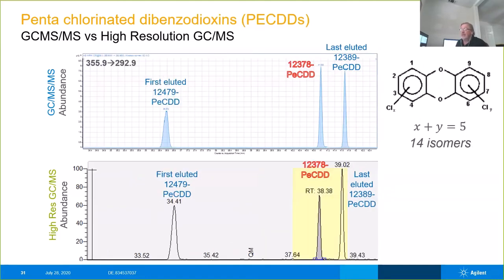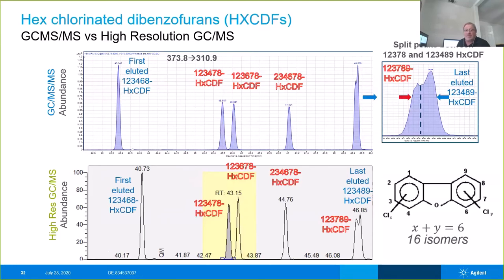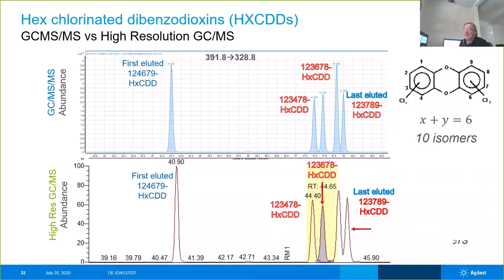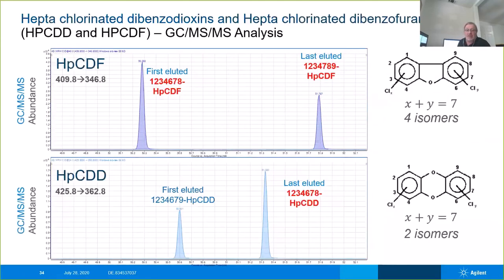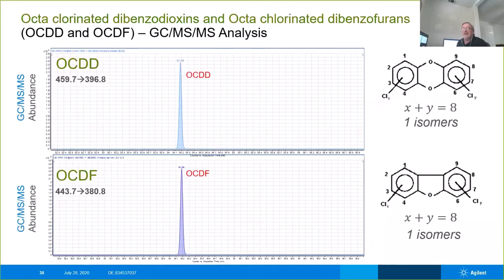Here's the pentas and hexas — we have specific isomers we're looking for, plus anything else within those windows. Here are the hexachloros and the heptachloros. For the octas, you'll notice there are no goalposts because there is only one OCDD and one OCDF — there's nothing that fits between them, as it encompasses all positions on the ring and only one isomer is possible.